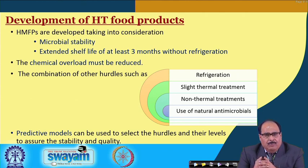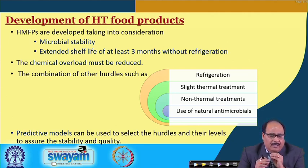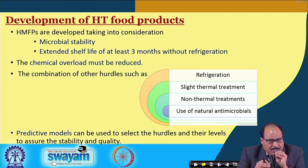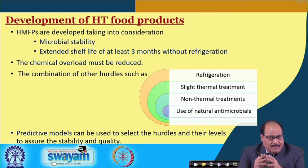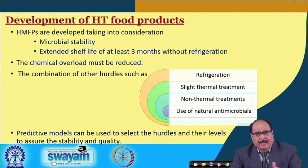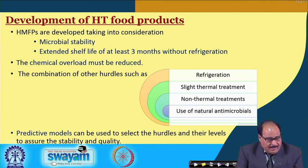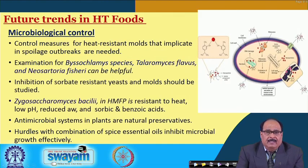As far as the development of hurdle technology food products is concerned, two factors should be taken into account. Different hurdles should be selected and process parameters chosen such that the product is microbiologically stable and has a shelf life of at least 3 months without refrigeration. The chemical overload in the product must be reduced, and this can be obtained by using combinations of hurdles such as refrigeration, slight thermal treatment, non-thermal treatment, and use of natural antimicrobials. Predictive mathematical models can be used to select the hurdles and their levels to assure stability and safety of the products.